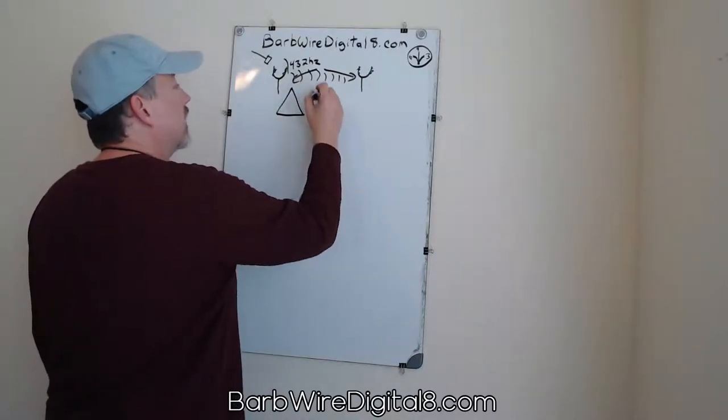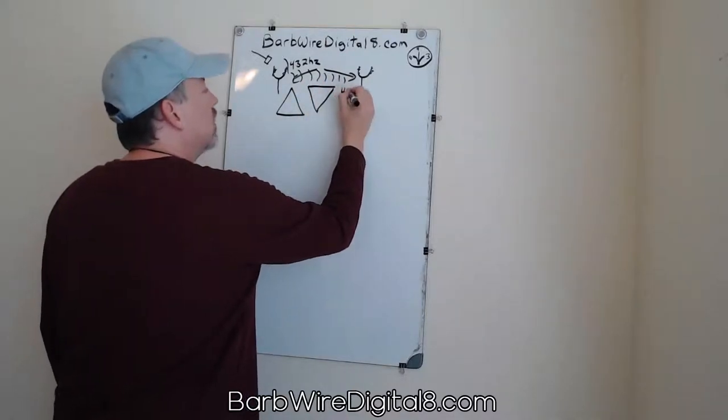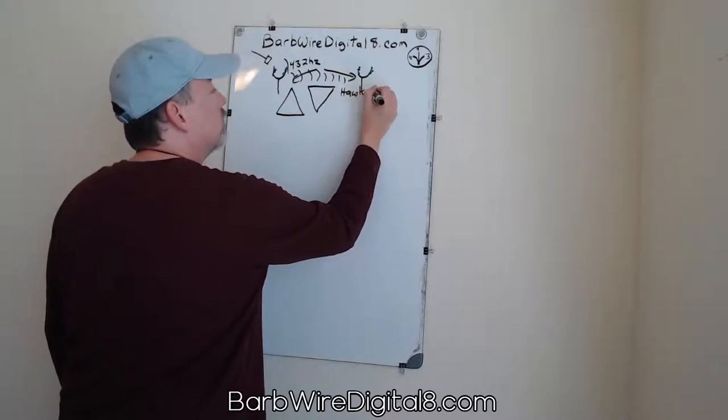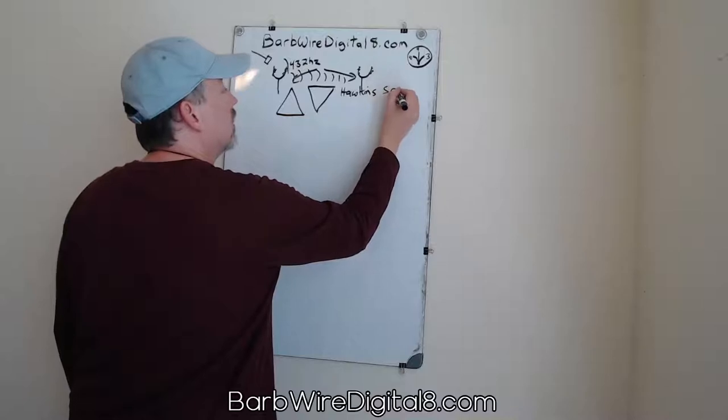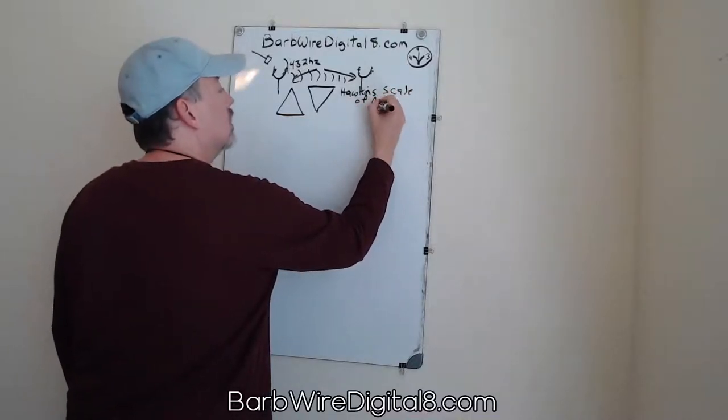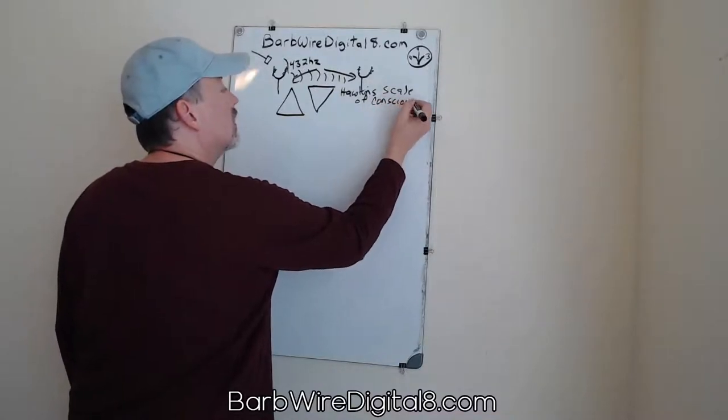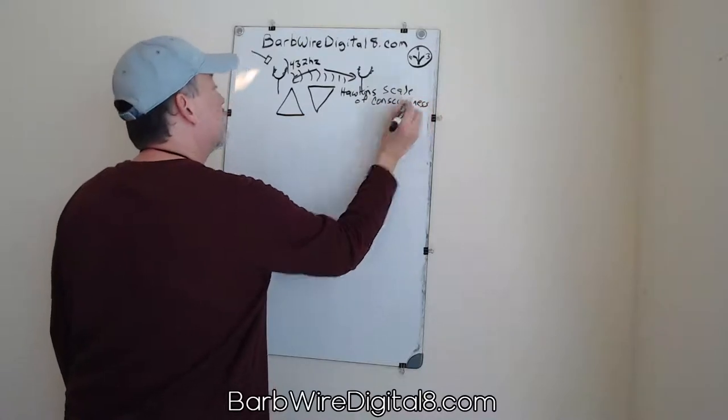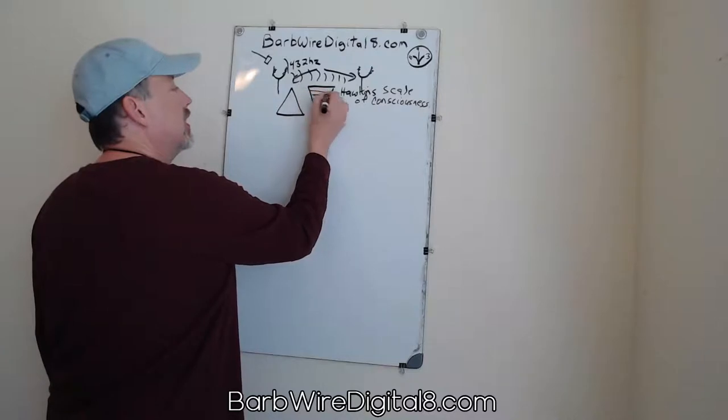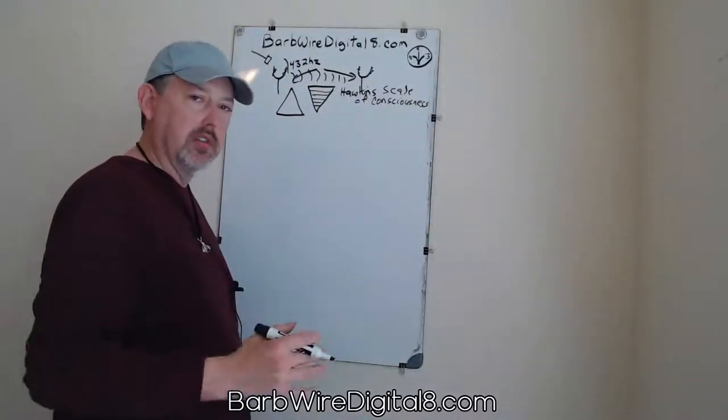Actually I drew that upside down. This is the Hawkins scale of consciousness.